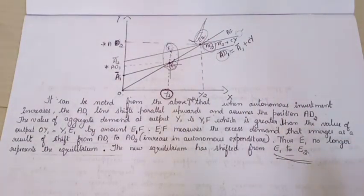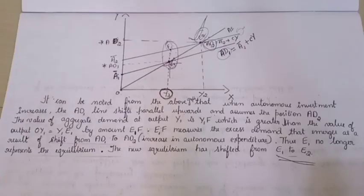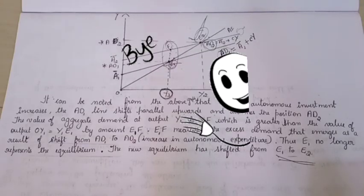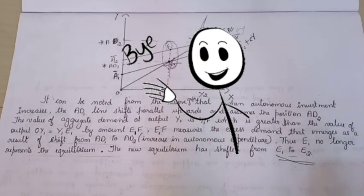That was it for today's video: effect of an autonomous change in aggregate demand on income and output for six marks. Thank you so much for watching. If you are finding the content useful, please consider subscribing to CMAS Academy. Also like, comment and share it with your friends. Thank you so much, see you in the next video. Take care, bye, namaste.